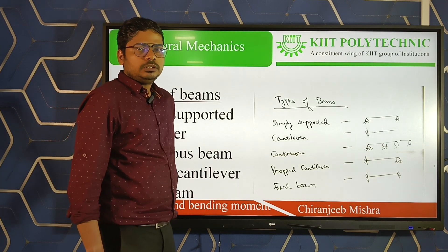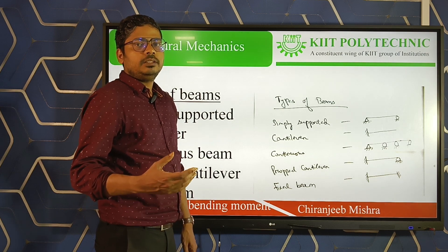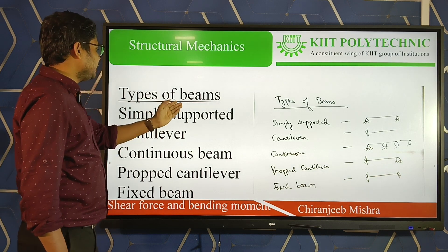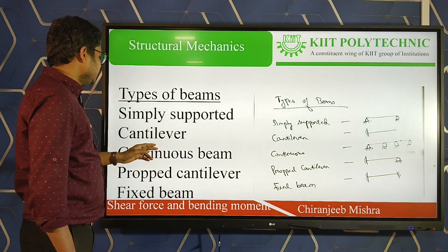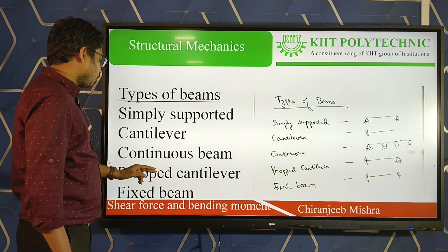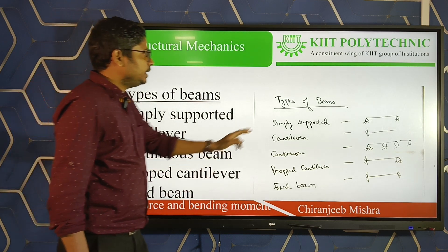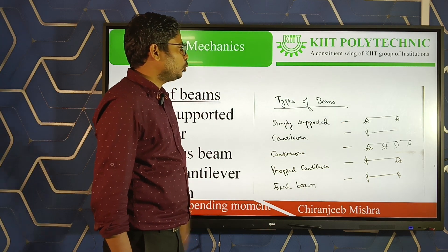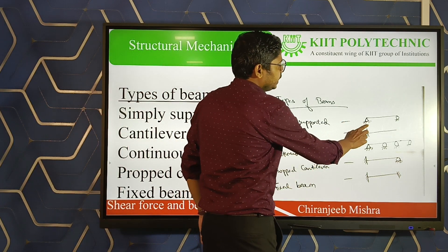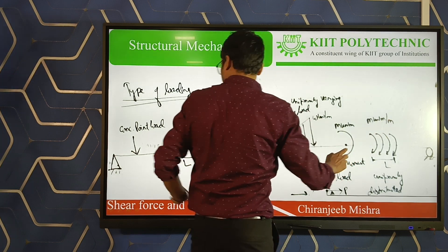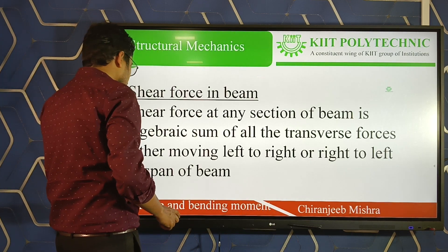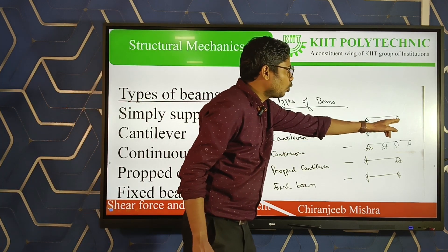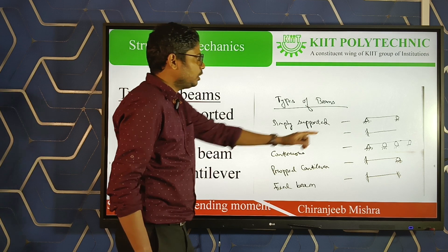Now we'll come to types of beams. Shear force and bending moment diagrams are generally done for beams. The types of beams are: simply supported, cantilever, continuous beam, propped cantilever, and fixed beam. A simply supported beam has one hinge support at one end and roller support at the other end.